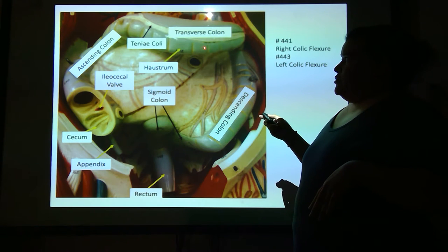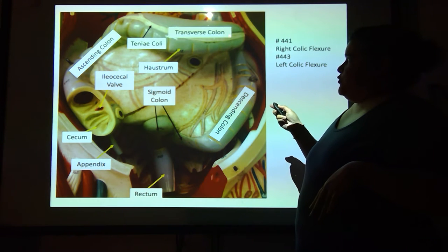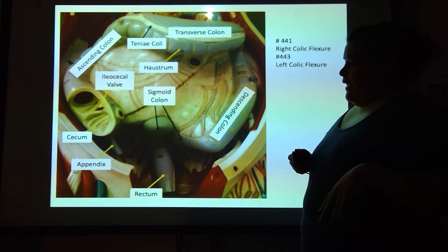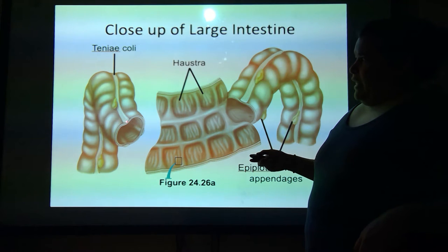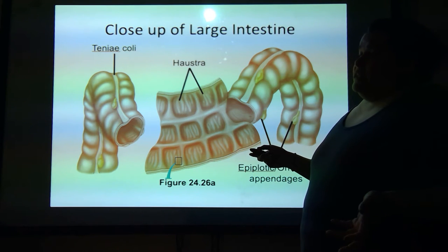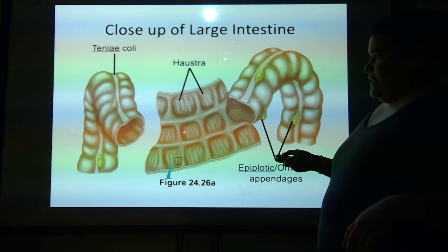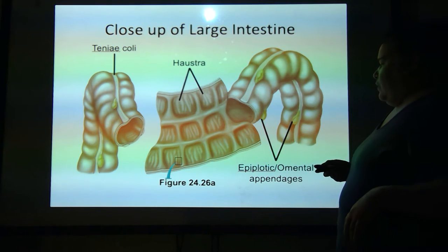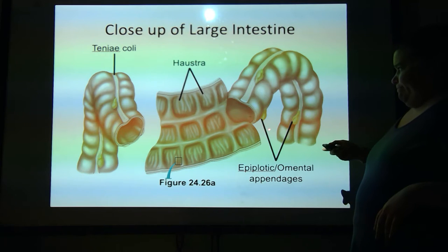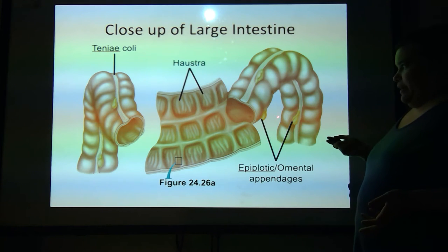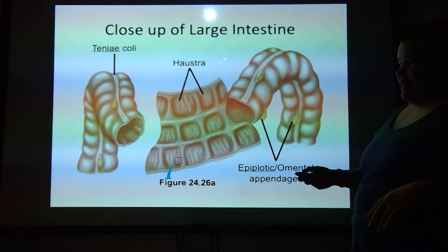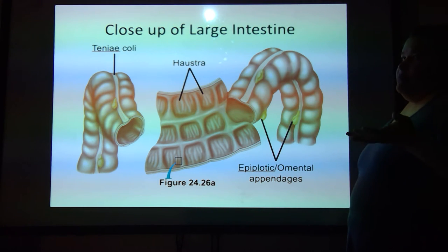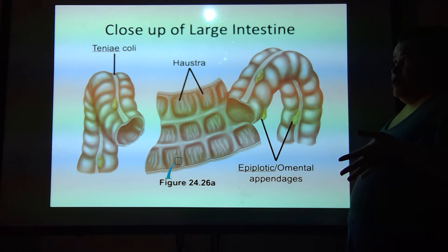Each one of these is a haustrum, and then that white strip is the teniae coli. There's the teniae coli, there's the epiploic appendage or the omental appendage. Each one of these lumps is a haustrum. And this is just kind of filleted open so that you can see from outside to the inside.